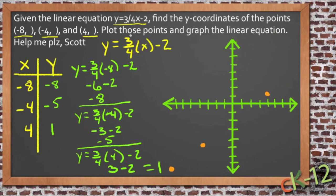So then it says plot points and graph linear equations. So we have all three points plotted. Looks like they are indeed in a line. Let's see if we can connect them with a reasonably straight line here. Yep, sure enough. So there's the line for this equation right here. y equals 3 quarters x minus 2. There you go, Scott. All done.